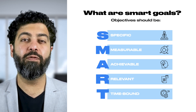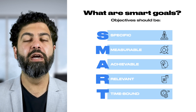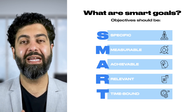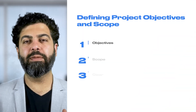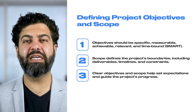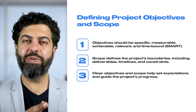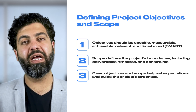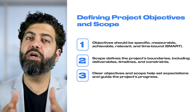If you create a SMART goal for your project during your planning, you will definitely have a path forward that should be the right step to take. Scope defines the project boundaries, including deliverables, timelines, and constraints. There has to be clear objectives and scope, and this usually helps you in setting expectations right and guiding you through the project's journey.